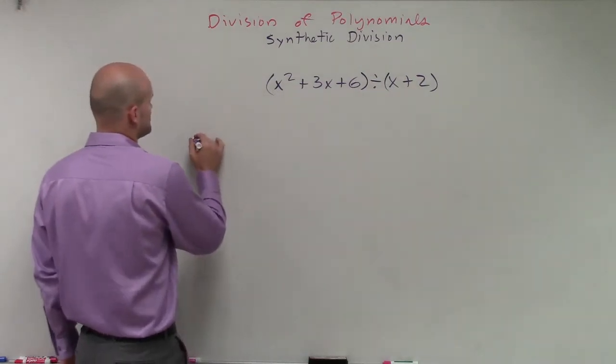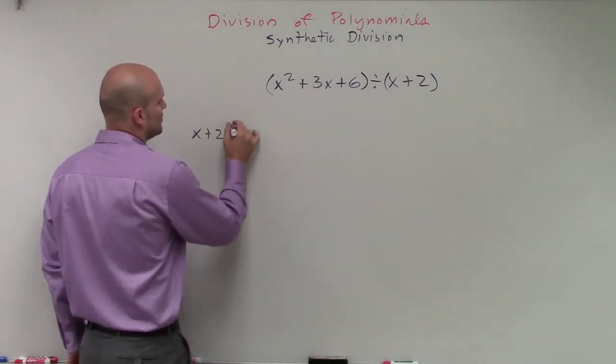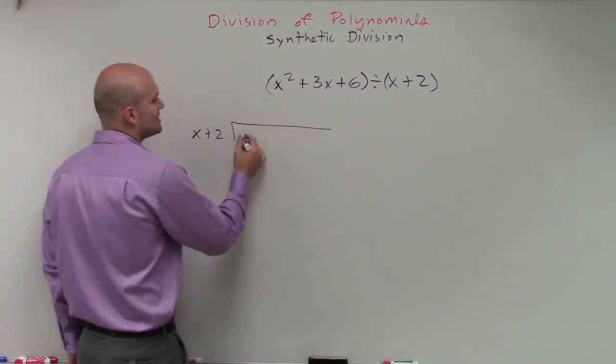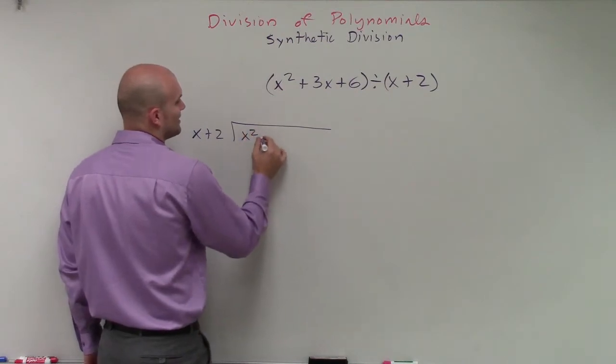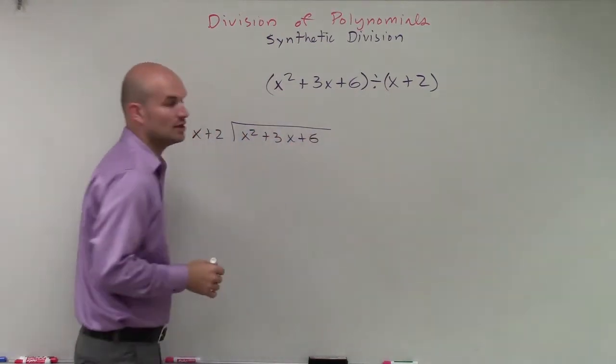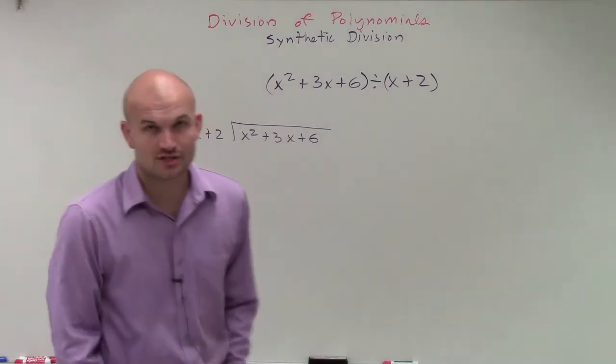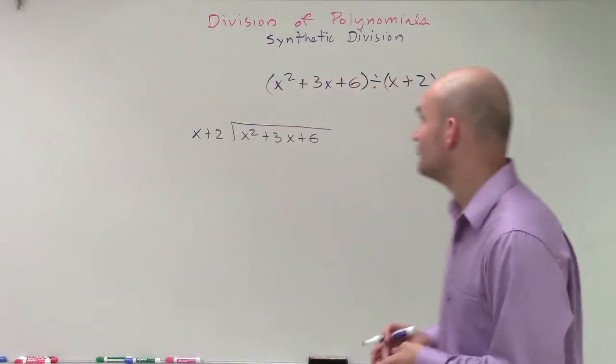By using long division, what we do is take our divisor, which was x plus 2, and then we would divide it into our dividend, which is x squared plus 3x plus 6. And then we'd apply the long division algorithm to go and finish this out, and that's very good.